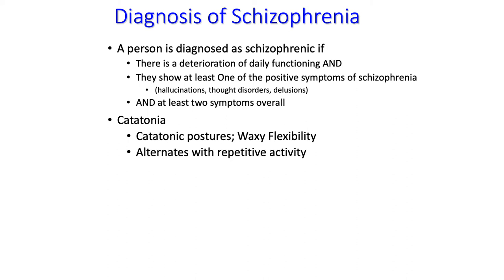A person is diagnosed as schizophrenic if they show at least two symptoms overall, with at least one being a positive symptom. This must be coupled with a deterioration of daily functioning — the person starts to become a problem for themselves, unable to take care of themselves or manage their life, or they become a nuisance to other people. Their daily functioning is severely impaired.